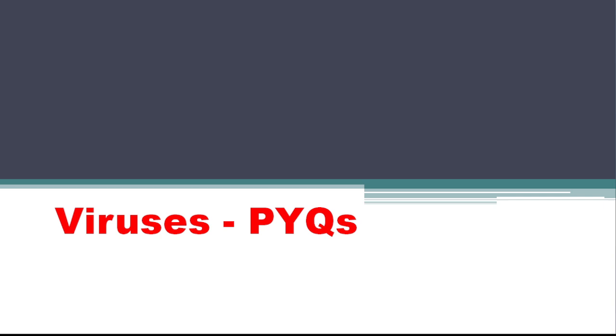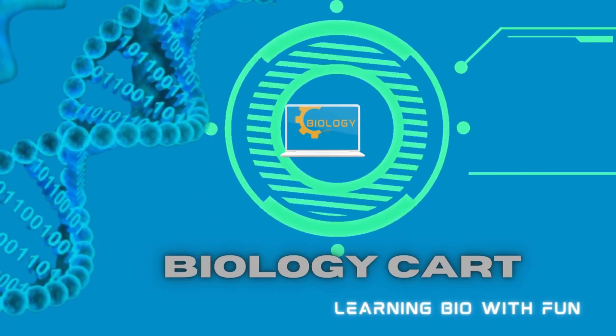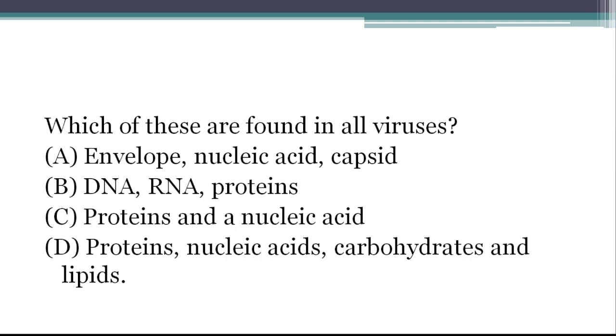Today we will see which of these are found in all viruses. So this is an important thing, all the viruses. We will tell you which are found in all viruses. Now see, the first option is enveloped. Just to see the envelopes, you can say that this option is wrong because the envelopes are not formed in all viruses. These are some viruses that are found in envelopes. We call them enveloped viruses. Now the other option is proteins, RNA, DNA. These are three things.